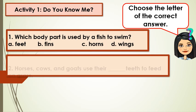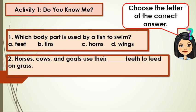Number 2: Horses, cows, and goats use their blank teeth to feed on grass. A. Flat, B. Sharp, C. Hoof, D. Horns.